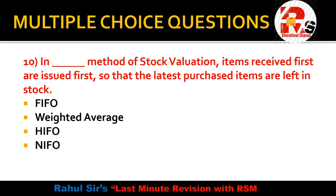Question ten is from the chapter of stock valuation. In dash method, items received first are issued first, so that the latest purchased items are left in stock. The options are FIFO, weighted average, HIFO (highest in first out), and NIFO (next in first out). Items purchased first are sold first — that is first in first out. So the right answer is FIFO — first in first out.